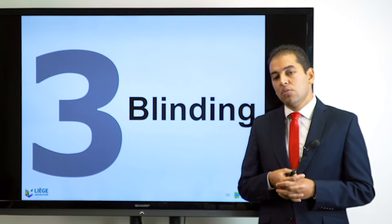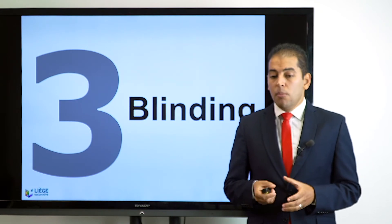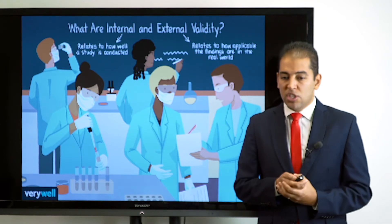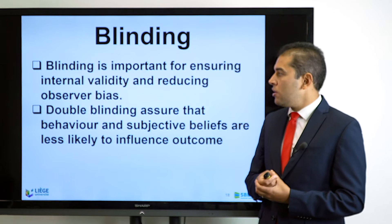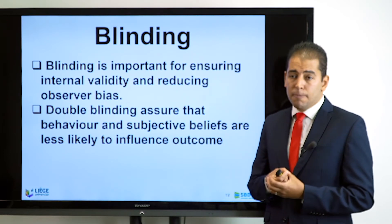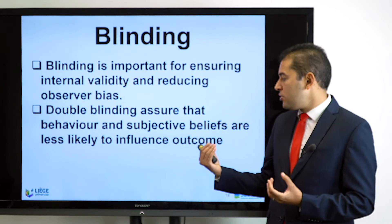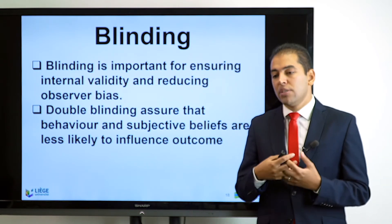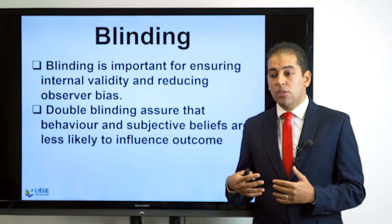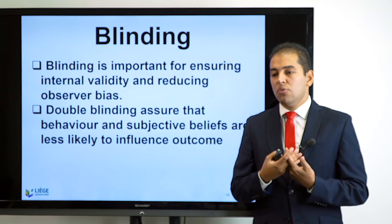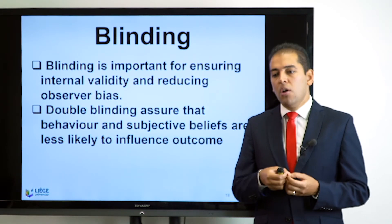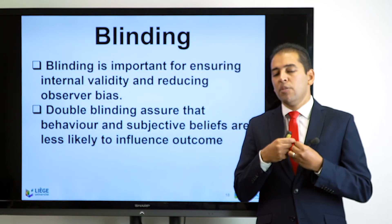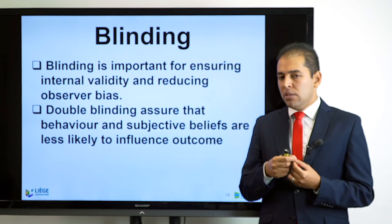Moving to the next part: blinding. Blinding is very important because it increases the internal validity of our research, allowing us to generalize findings. Blinding ensures internal validity and reduces observer bias. Double blinding assures that behavior and subjective beliefs are less likely to influence the outcome — making sure nobody knows what kind of intervention or treatment is being applied. Double blinding is the highest standard of quality to ensure there is no human bias or error related to the potentially manipulative nature of the intervention.